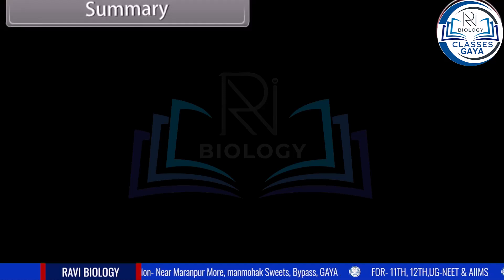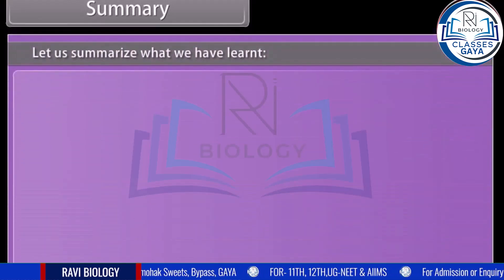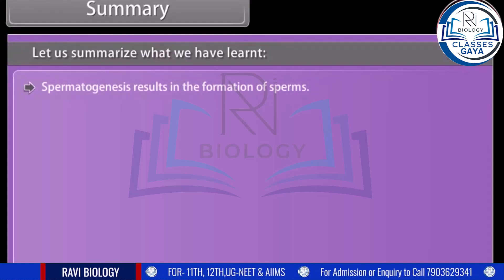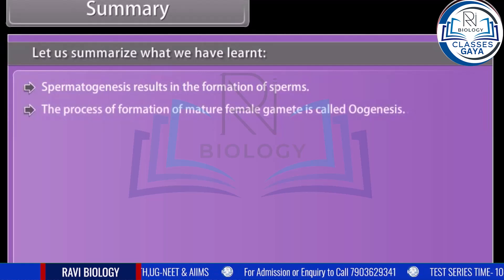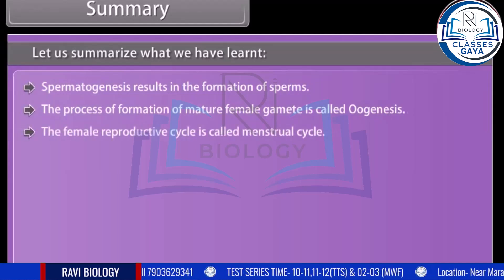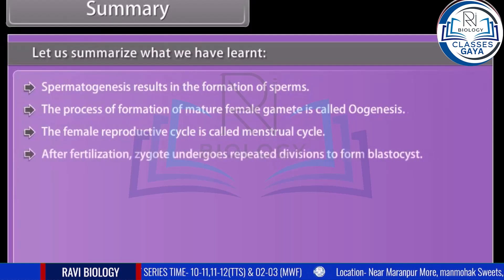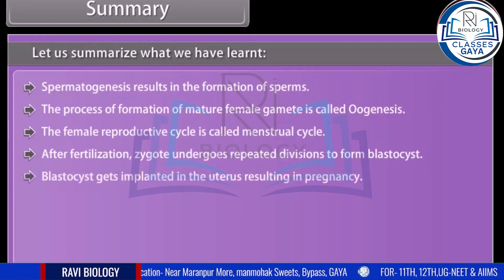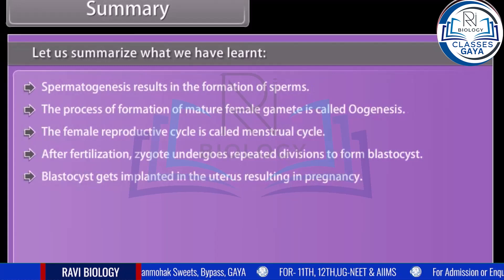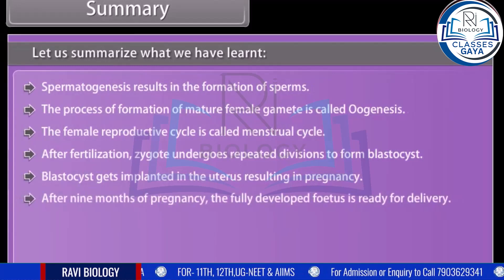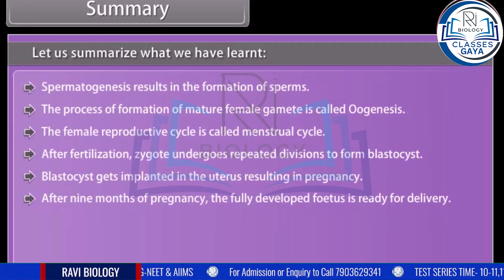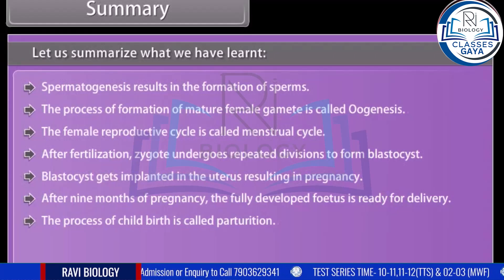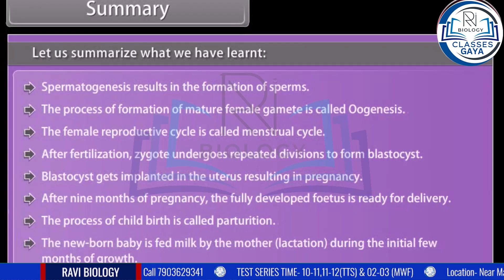Let us summarize what we have learned. Spermatogenesis results in the formation of sperms. The process of formation of a mature female gamete is called oogenesis. The female reproductive cycle is called the menstrual cycle. After fertilization, the zygote undergoes repeated divisions to form a blastocyst, which gets implanted in the uterus resulting in pregnancy. After nine months of pregnancy, the fully developed fetus is ready for delivery. The process of childbirth is called parturition. The newborn baby is fed milk by the mother through lactation during the initial few months of growth.